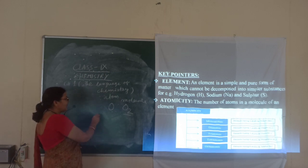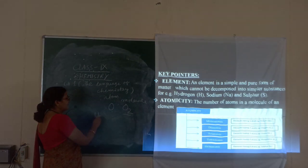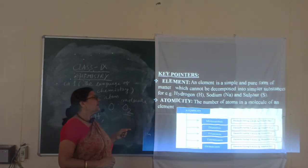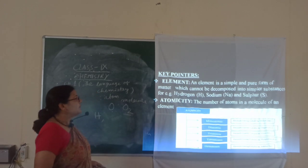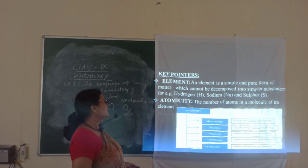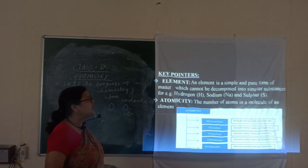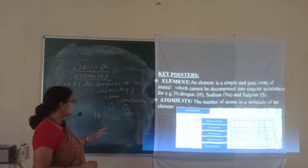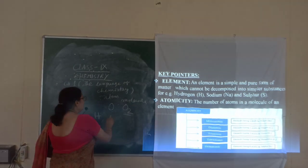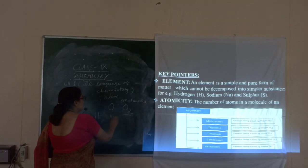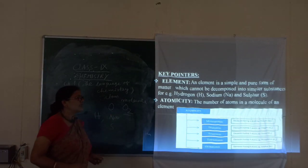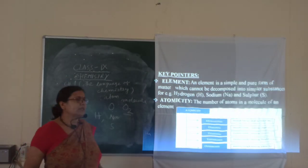Element and compound — I am writing the example. The element is the simple and the purest form of matter, which cannot be decomposed into simpler substances. You can say hydrogen, sodium (Na), and sulfur — all these are the examples of elements. But when you take the compound, that is CO2, because it consists of carbon and oxygen, two different elements.